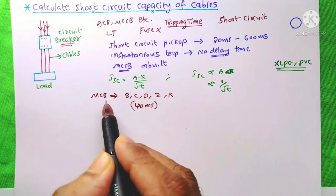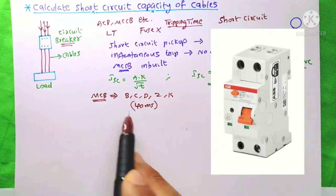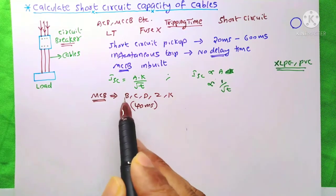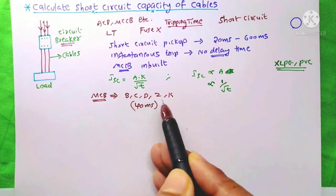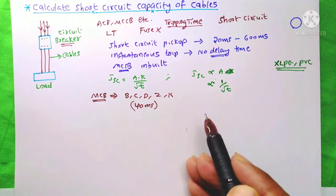a circuit which is controlled by an MCB, we know that for an MCB, there are B, C, D, Z, K curves present.